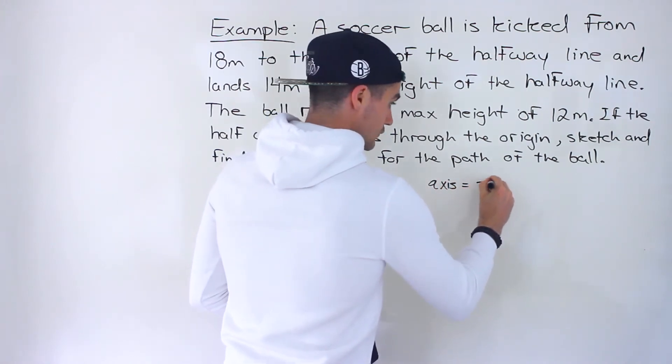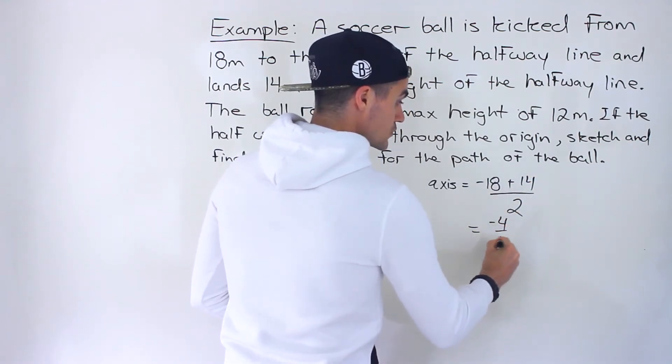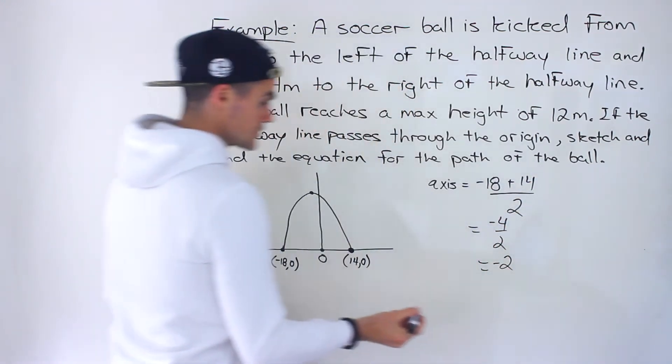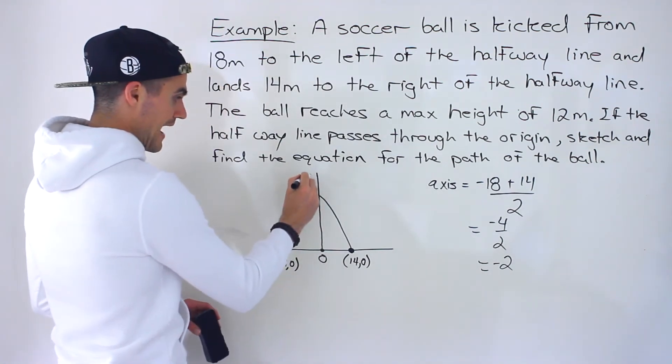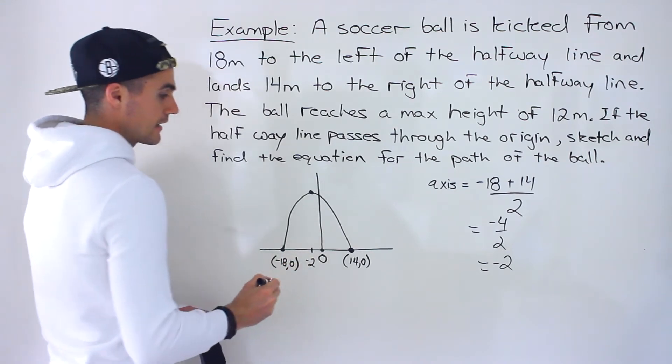So the axis is negative 18 plus 14. We'd end up with negative four over two, which would give us negative two. So we know the axis, where this maximum point is happening, the x value is at negative two.